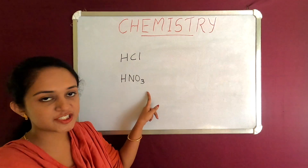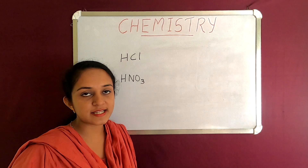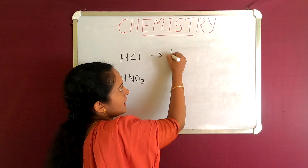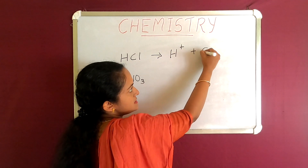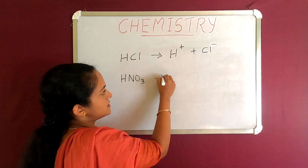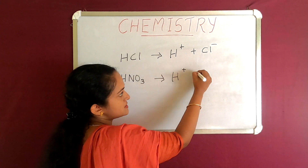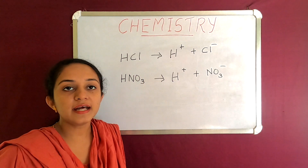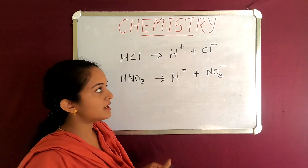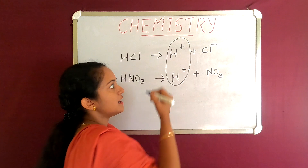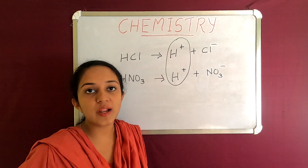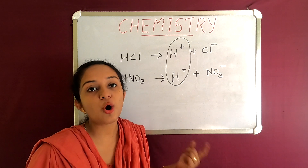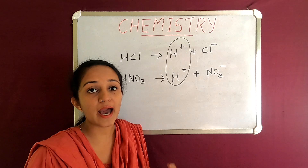The common component of acids: hydrochloric acid, nitric acid. These are two acids. These acids form ions. HCl gives H⁺ plus Cl⁻ ions. HNO₃ gives H⁺ plus NO₃⁻ ions. The common component is H⁺ ions. All acids contain H⁺ ions — that is the same common component of all acids.